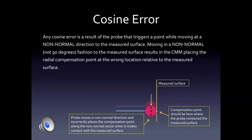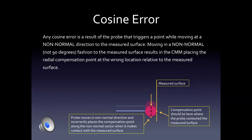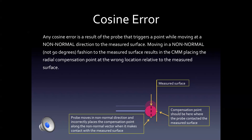Cosine error is a result of the probe triggering a point while moving at a non-normal direction to the measured surface. Moving in a non-normal — or not 90 degrees — fashion to the measured surface results in the CMM placing the radial compensation point at the wrong location relative to the measured surface.